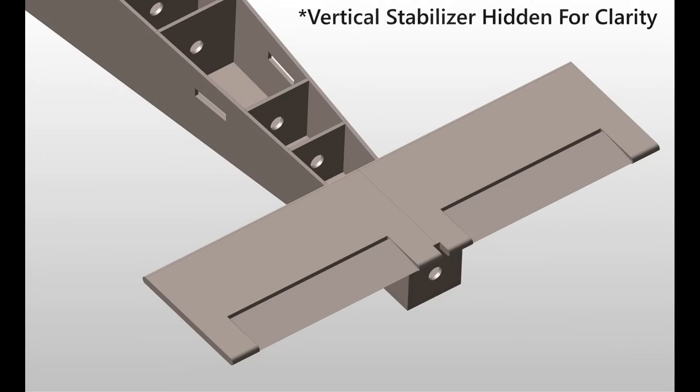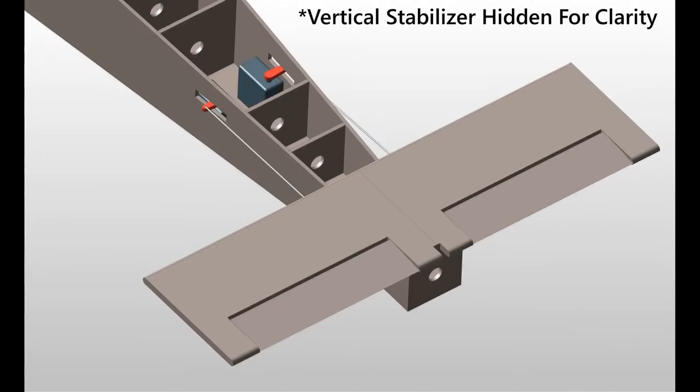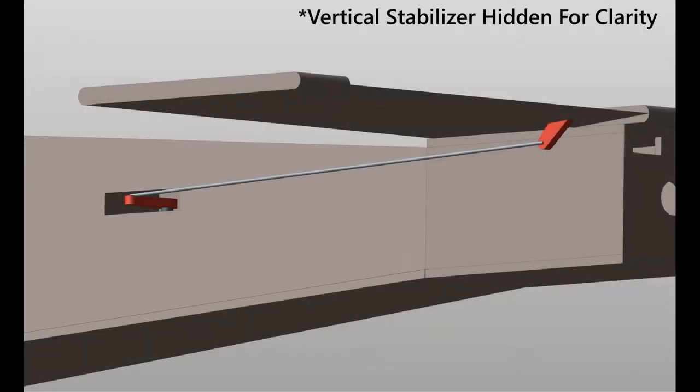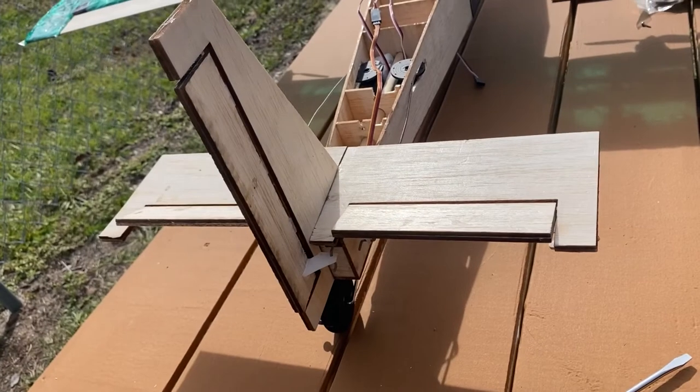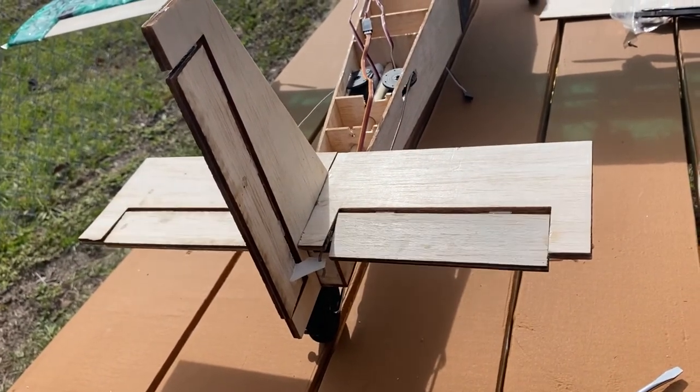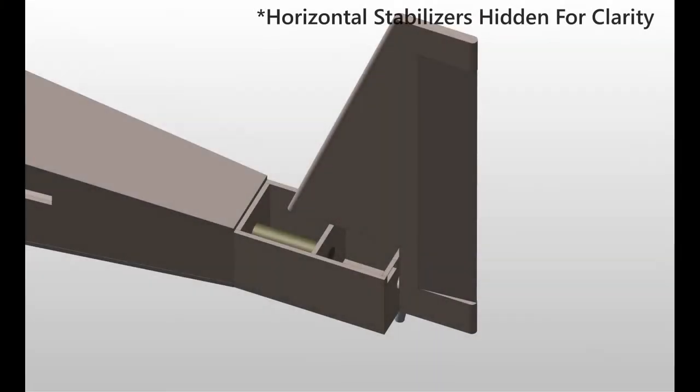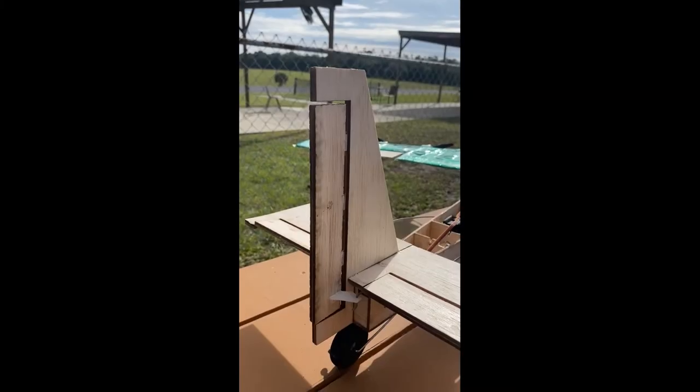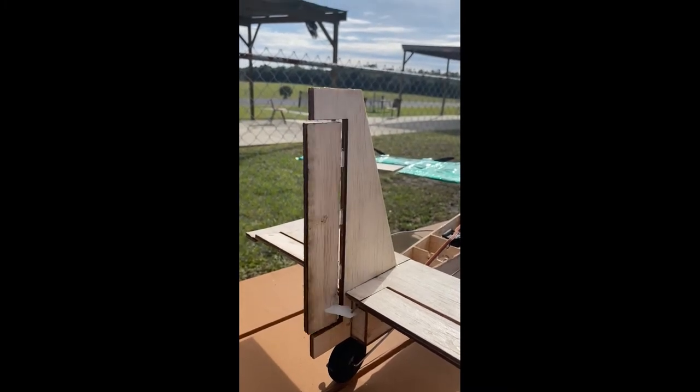To control the elevators, two servos are mounted halfway up the converging tail section, with their arms sticking out either side through slits cut through the balsa wood walls. The servo arms are connected to plastic moment horns attached to the elevators with push-pull rods. As the servos rotate, the rods push and pull the horns and the elevators deflect up and down. The control for the rudder is very similar. A servo is mounted in the tail stabilizer mounting section, and a control arm is run from the servo's arm to a moment horn on the rudder. As the servo rotates, the rudder deflects left and right.